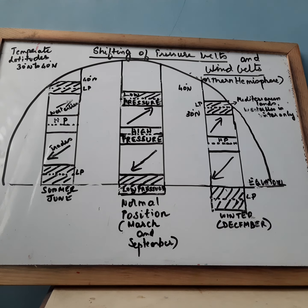This is a normal position. So in this diagram you can find how the pressure belts are shifted northwards and southwards.